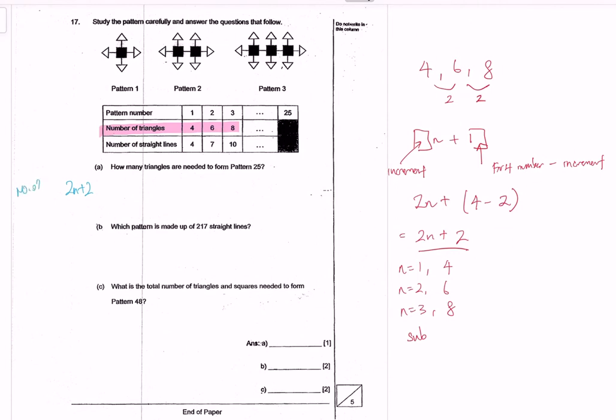Number of triangles. So we substitute n as 25. So the number of triangles would be 2 times 25 plus 2 giving me 52. That would be part A.